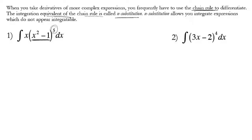Most of the time, what you need to change out would be something in this form here. This is called a u-substitution because we're going to say u is equal to x squared minus 1. As soon as we assign a u value, we find the derivative: du is 2x dx. We're going to go back and see if we can change out some values, because we want something to look like the integral of u du.